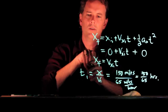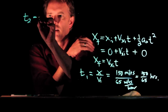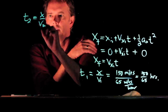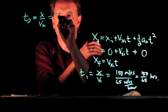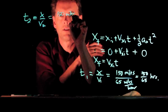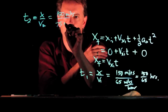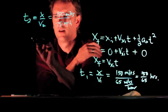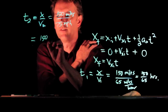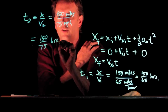T2 is going to be x over V2, which is 150 miles divided by 75 miles per hour. And that one's easy — we got 150 over 75, which is just 2.